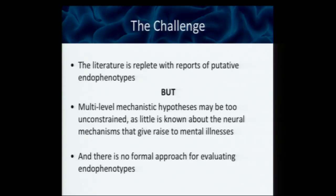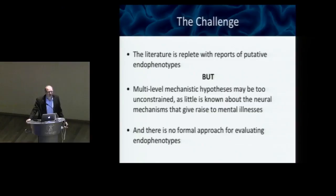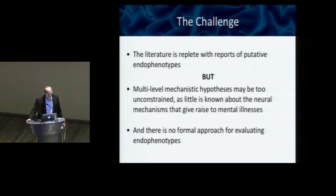The challenge is that the literature is replete with reports of putative endophenotypes, and not everybody is as careful about defining endophenotypes by requiring a common genetic effect. Also, the multilevel hypothesis — that thing that goes from the genome to the proteome and so on — for most of neuroscience, it's too unconstrained. You can come up with whatever story you want, and there was no formal approach for evaluating endophenotypes, no way of saying this is a better endophenotype than that one.